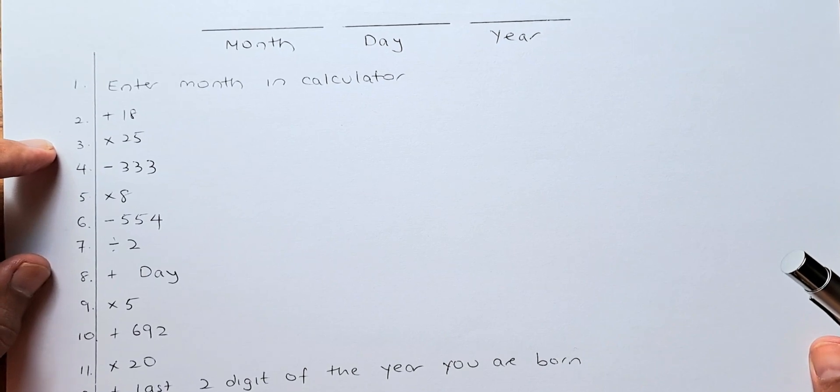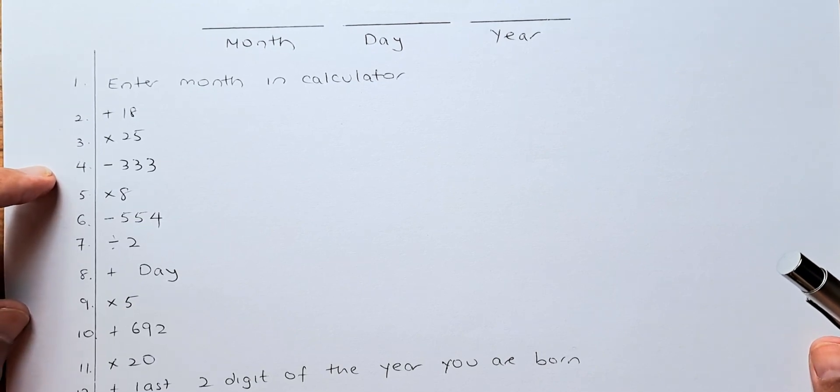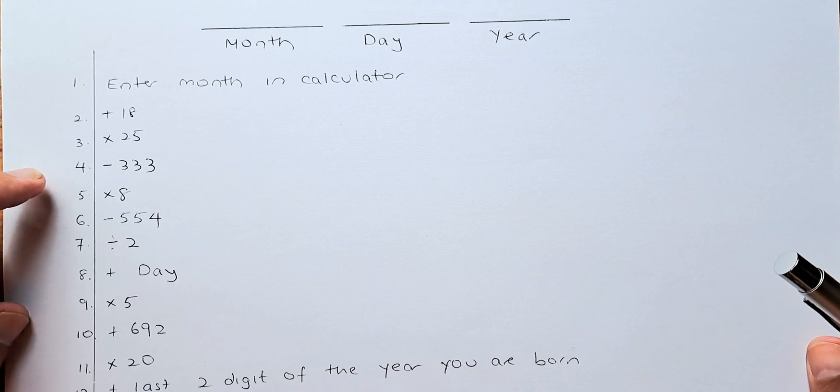You've done that? Great! Then from the result, you are going to minus 333. Then followed by multiply by 8.